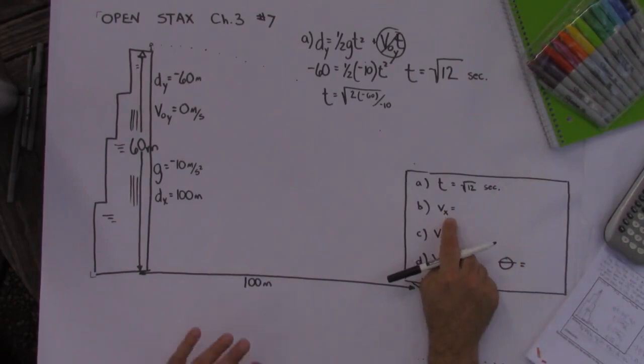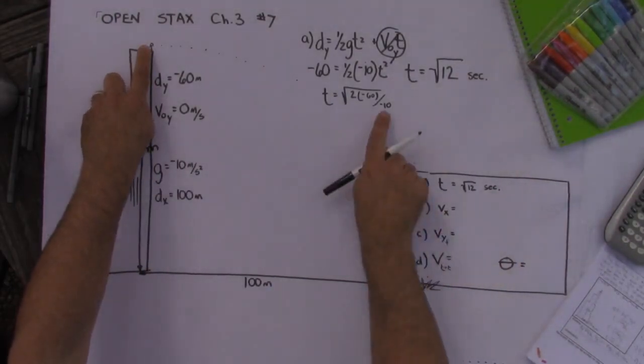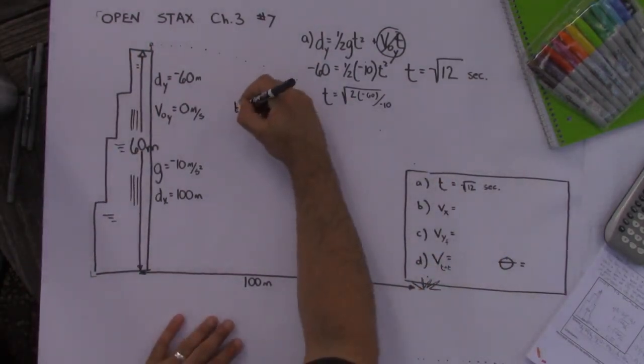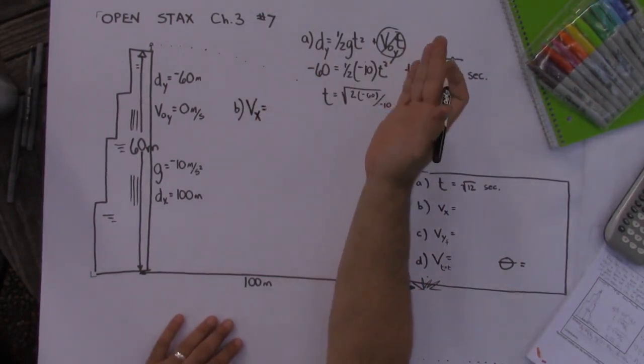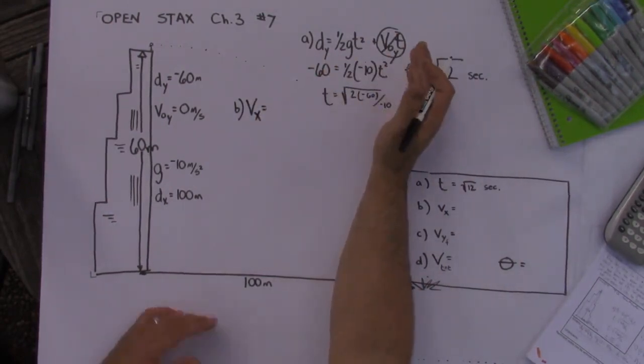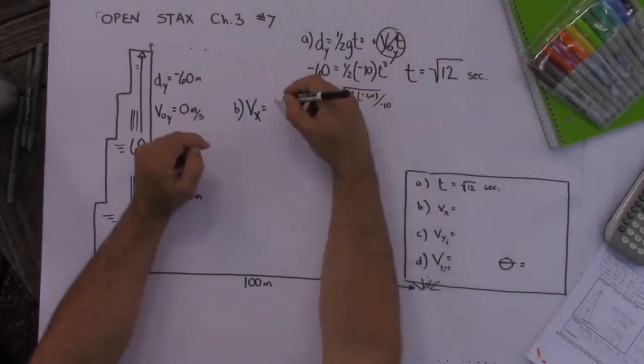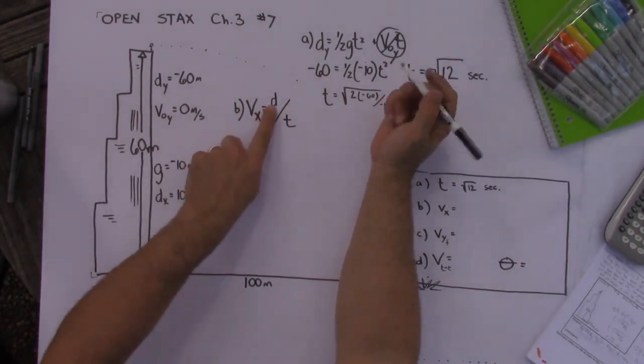All right we are one fourth of the way done with this problem. Now the velocity in the x direction we have no idea what it was, but we know how much time it spends in the air and we know how far it goes. So looking at my formulas now I know that the velocity in the x direction is constant. It doesn't change. Gravity only works in the up and down direction so this velocity in the x remains constant. So it's an average velocity. That's my displacement over time.